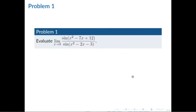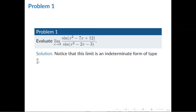The first example is: evaluate the limit of sine(x² - 7x + 12) all over sine(x² - 2x - 3) as x approaches 3. We need to notice that this limit is an indeterminate form of type 0 over 0. Once we substitute x = 3 into this equation, we get sine(0) all over sine(0), which is 0 over 0 — an indeterminate form.